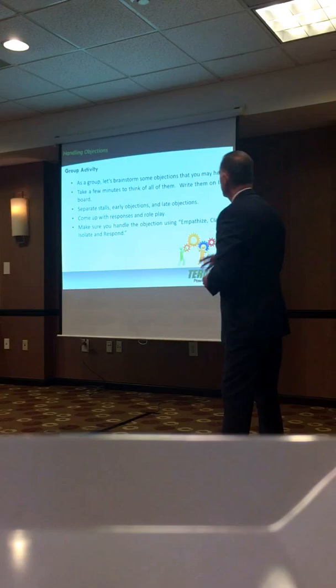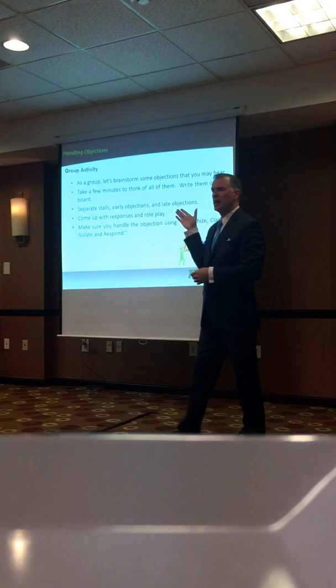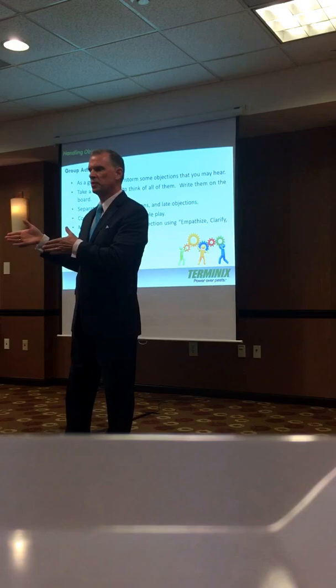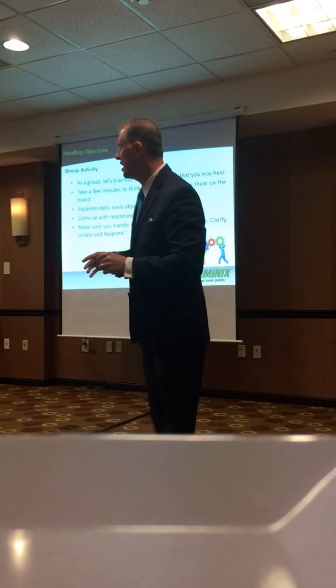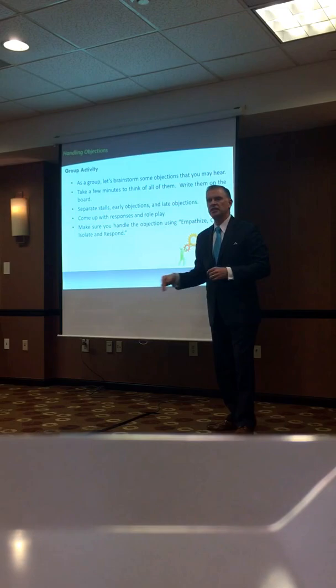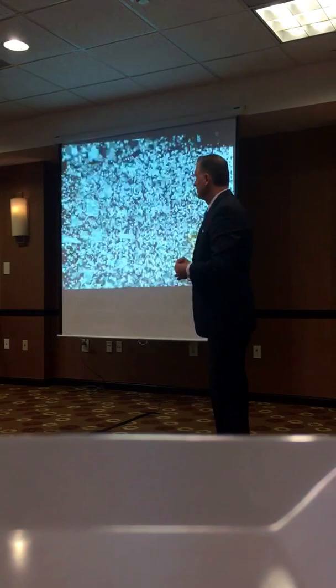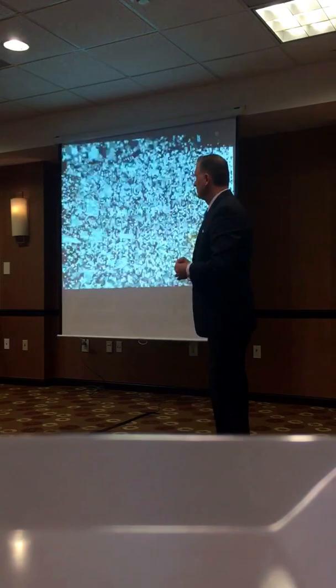So here's a group activity we're going to do after the break, but I want to leave some time for Q&A first. As a group, we're going to brainstorm objections that you may hear. Write them down on the whiteboard set up on the side of the room. We also have separate columns for early objections and late objections — two different buckets. As a group, come up with some responses and role play those responses, making sure that you handle the objection using empathy, clarity, isolation, and response. Let me repeat that: we're using empathy, we're clarifying, we're isolating, and we're responding to the objection. Now let's open up the floor for any questions.